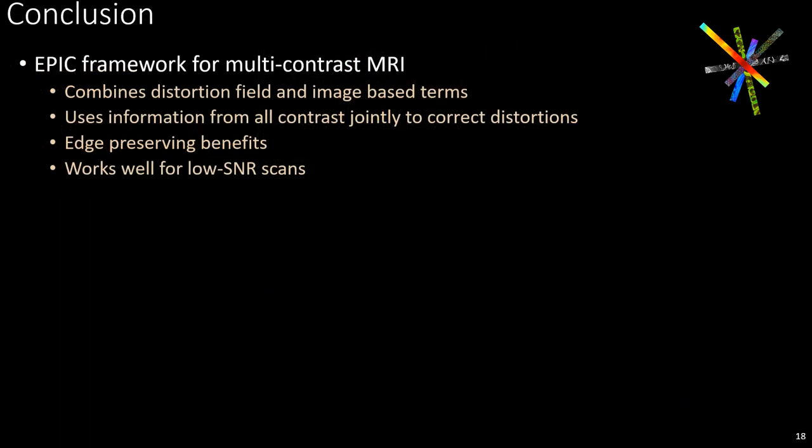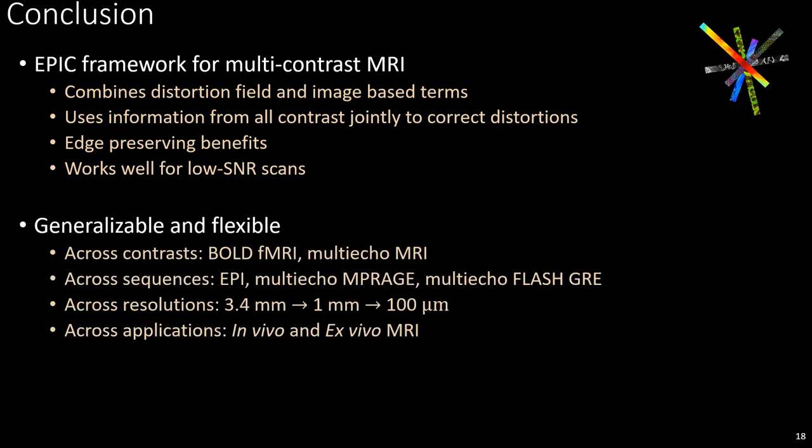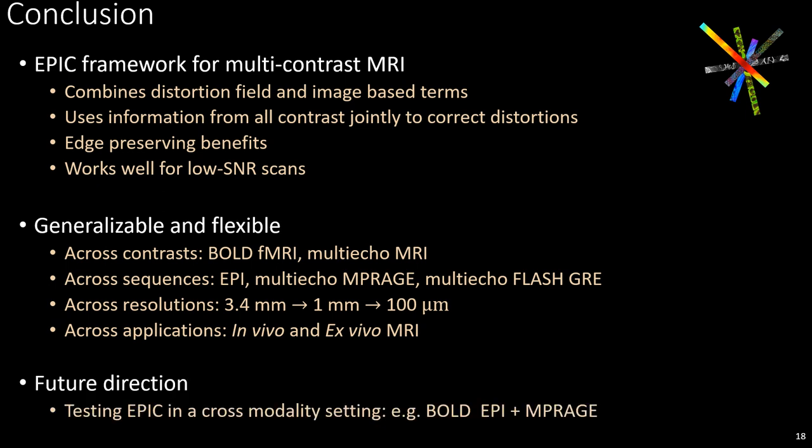To conclude, we presented EPIC, a new multi-contrast distortion correction method that uses all the data from all contrasts jointly, with SNR and edge-preserving benefits. One of the biggest strengths of this approach is its generalizability across contrast sequences, resolutions, and both in vivo and ex vivo applications, all of which were demonstrated. Currently, we are testing EPIC in a cross-modality setup such as EPI plus MPRAGE correction.